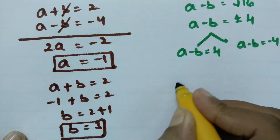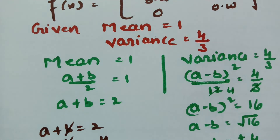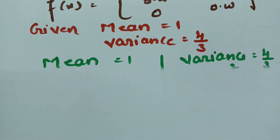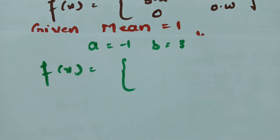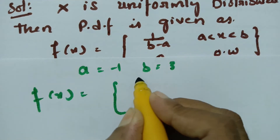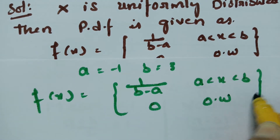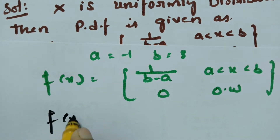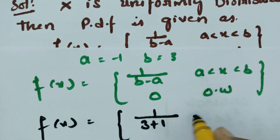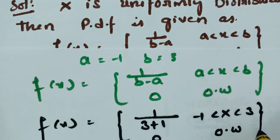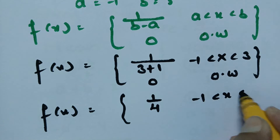Taking a = −1 and b = 3, the probability density function becomes: f(x) = 1/(b − a) = 1/(3 − (−1)) = 1/4, when x lies between −1 and 3, and 0 otherwise.